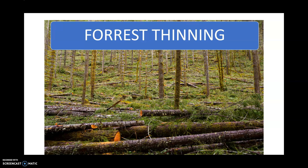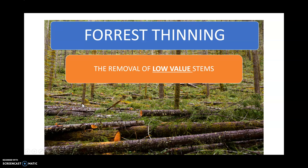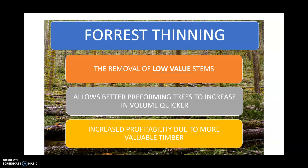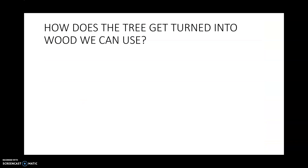Forest thinning is the first part we are going to talk about. As you can see in this forest, we have a few trees standing up with a lot of trees after being felled. Forest thinning is the removal of low value stems. It allows better performing trees to increase in volume quicker, because more sunlight is getting towards the trees and they are creating more sugars through photosynthesis. Forest thinning increases profitability due to more valuable timber.